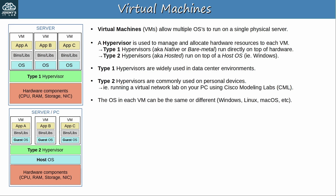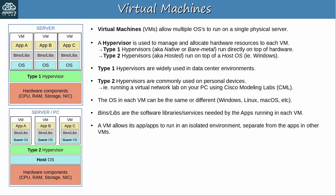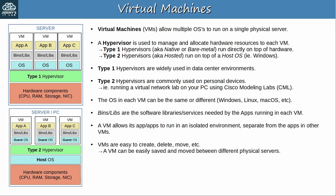Note that the OS in each VM can be the same or different. If you are running multiple VMs, one can be running Windows, another Linux, and another macOS — that's no problem. The binaries and libraries are software libraries and services needed by the apps running in each VM. A VM allows its app or apps to run in an isolated environment, separate from the apps in other VMs. If there is an issue with one app or one of the guest OSs, it's not going to affect the others. VMs are also easy to create, delete, and move — for example, a VM can be easily saved and moved between different physical servers.